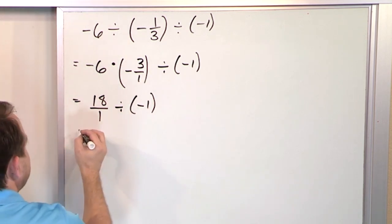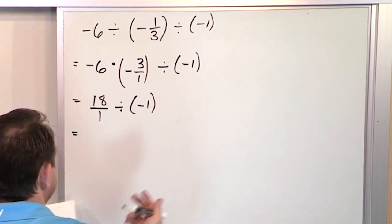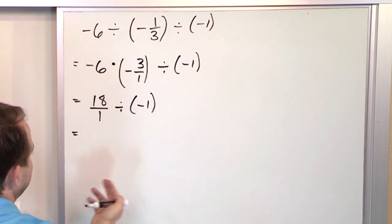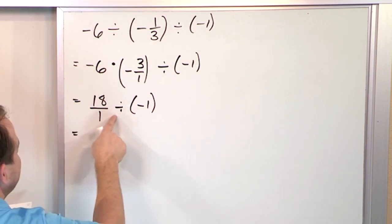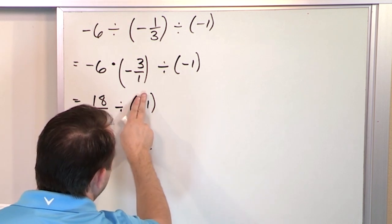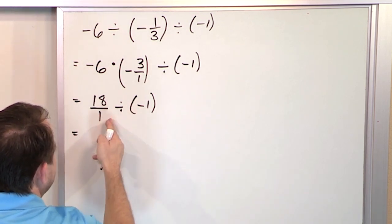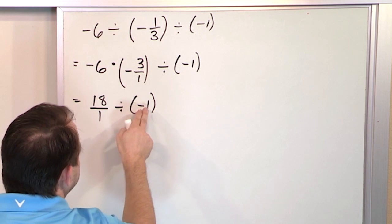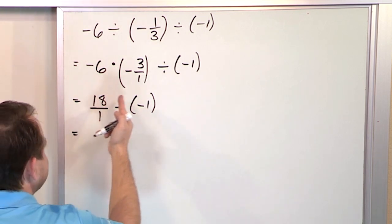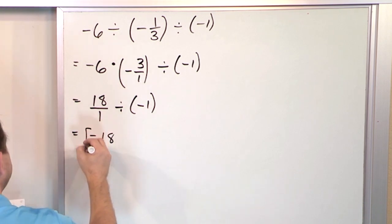You're going to do the same thing again. If this were just a positive 1, you know anything divided by 1 — so 18 divided by 1 is just 18. But since it's positive divided by negative, it's going to be negative 18. So that's the final answer.